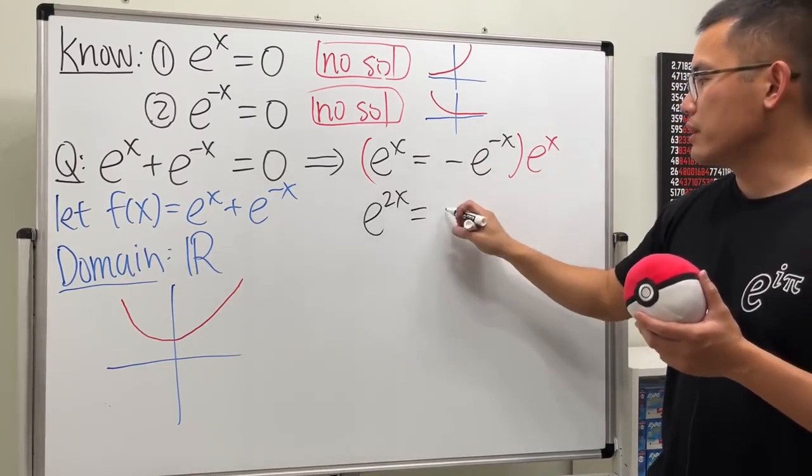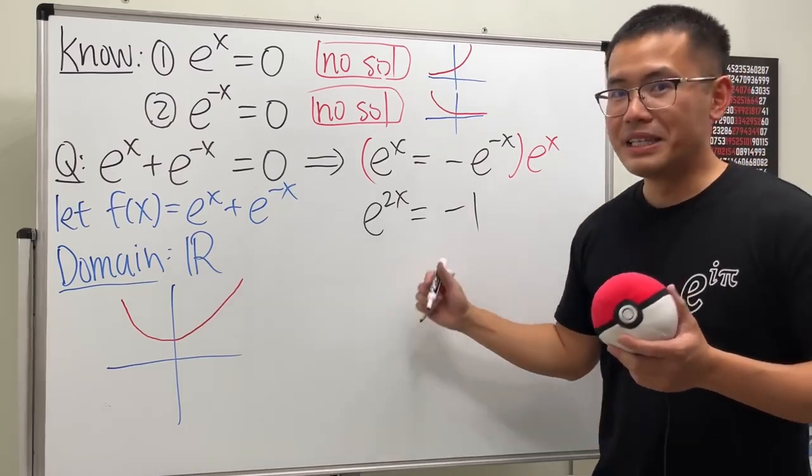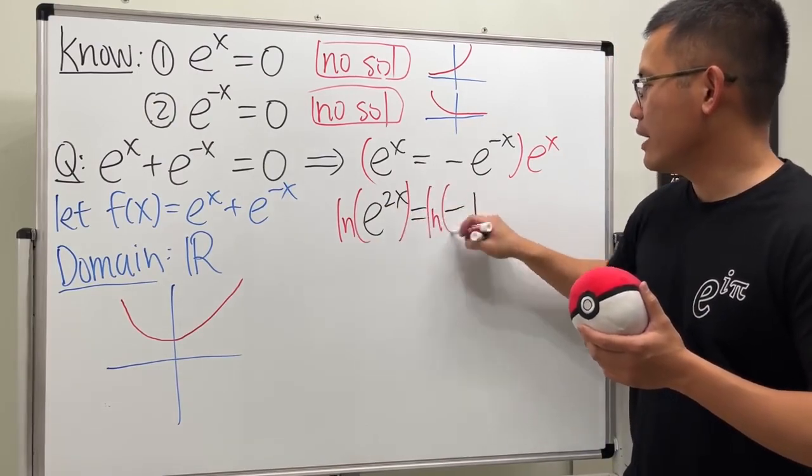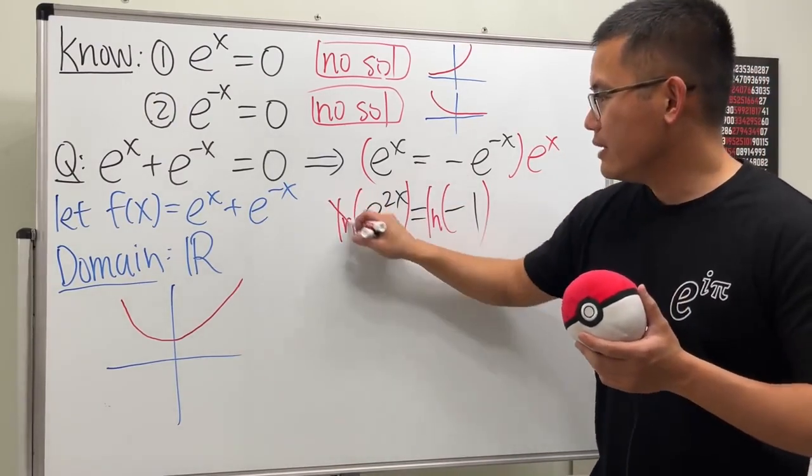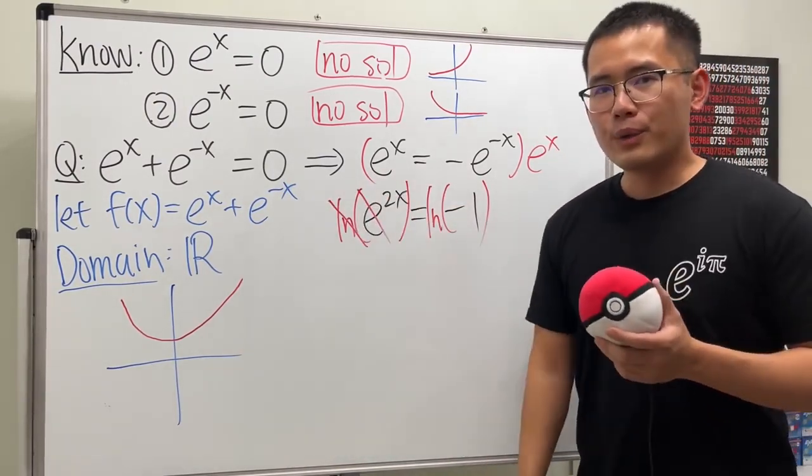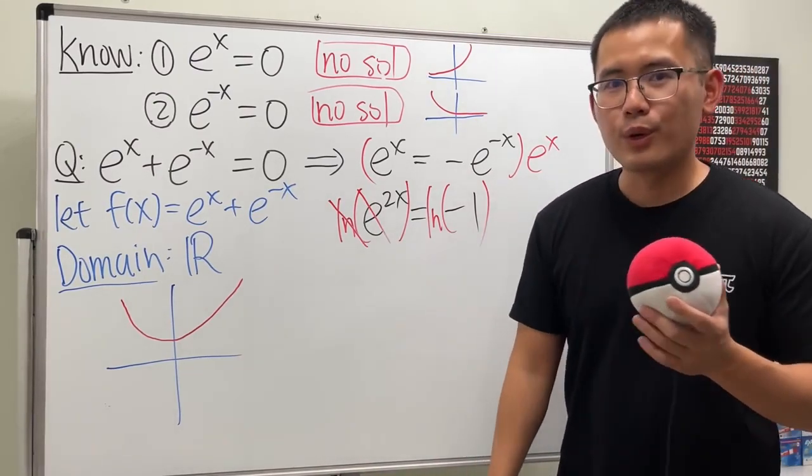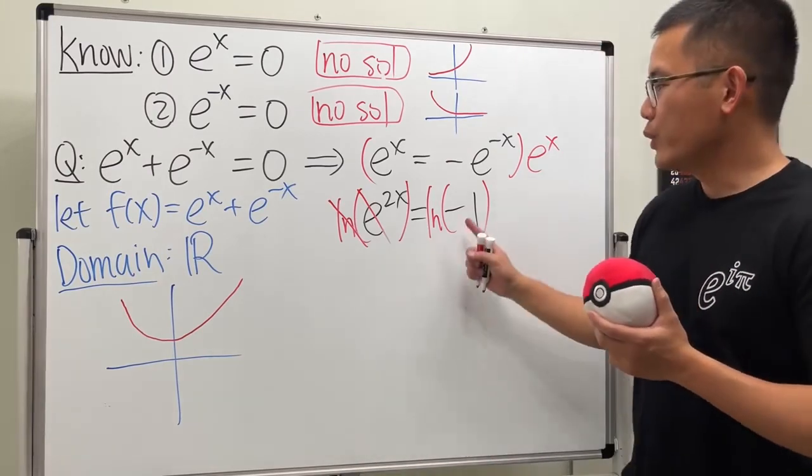How do we deal with this? Still go ahead and take the ln on both sides. This way these can cancel. But now the question is how do we handle ln of negative 1? You want to know a quick way to do it?